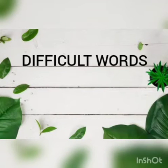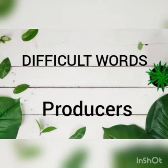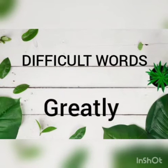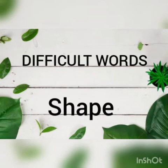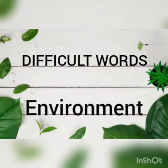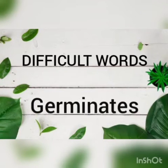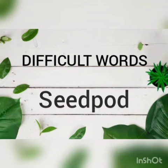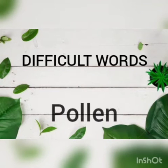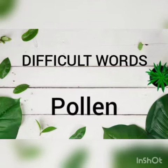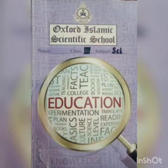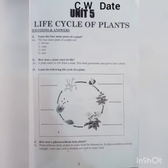Difficult words: Producers, Differ, Greatly, Shape, Environment, Germinates, Fully grown, Seed pot, Sprout, Pollen, Butterflies, Hummingbirds. Open your science docket and make a sketch on page number 9.